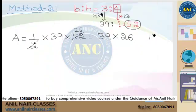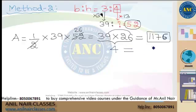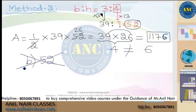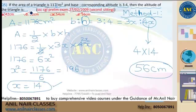The question states area is 1176 centimeter square. Check whether 39 into 26 gives 1176. Instead of multiplying fully, use the unit digit shortcut: unit digit of 1176 is 6. Unit digit of 39 into 26: 9 into 6 = 54, unit digit is 4. Unit digit 4 ≠ unit digit 6, so the assumption of 52 is incorrect. Option A was already eliminated, option B (52) eliminated now, option C eliminated as not a multiple of 4. Therefore correct answer is option D: 56 cm.